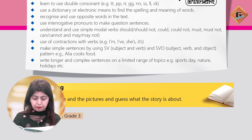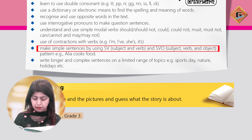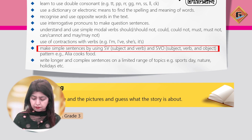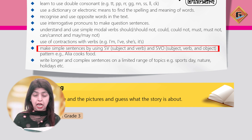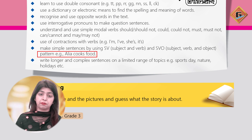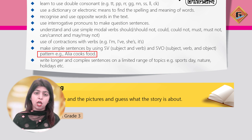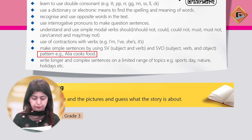Use contractions with the verb — for example: I'm, I've, she's, it's. Make simple sentences using SV, that is subject and verb, and SVO — subject, verb, and object — patterns. For example, 'Alia cooks food': Alia is the subject, cooks is the verb, and food is the object.